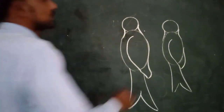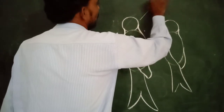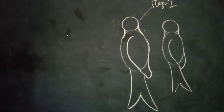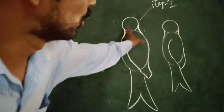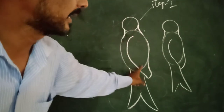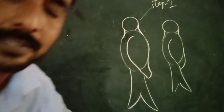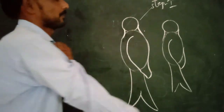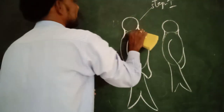This is step one. In step one, what I did: I have taken the help of an oval and added one circle. Next I divided the wing as well as the tail. Now let's go to step two. I am erasing here.